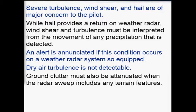An alert is annunciated in the weather radar system if this condition occurs, in systems so equipped. Dry air turbulence is not detectable — if dry air turbulence is present it will not have precipitation, so there will be no return. Dry air turbulence can therefore be a problem for the aircraft. Ground clutter must also be attenuated when the radar sweep includes terrain features.